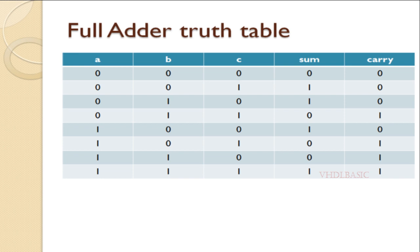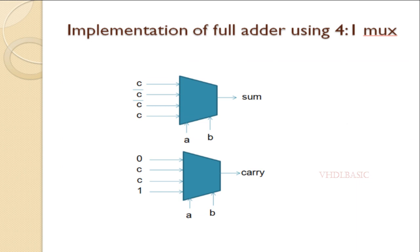I am connecting a and b to the select lines. In the case of sum: i0 will be c, i1 will be c-bar, i2 will be c-bar, and i3 will be c.